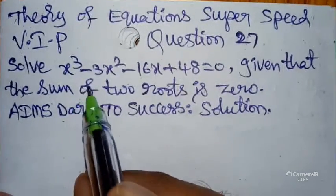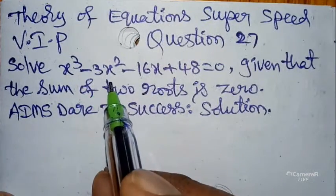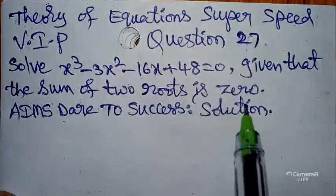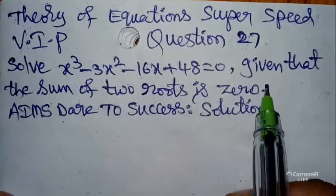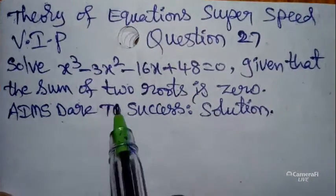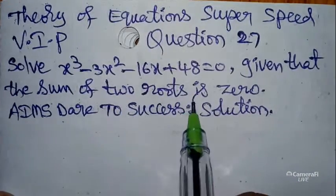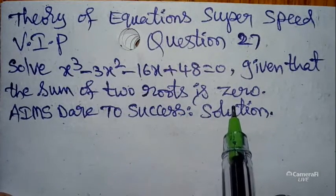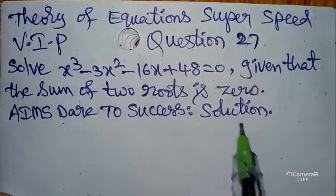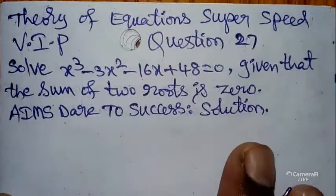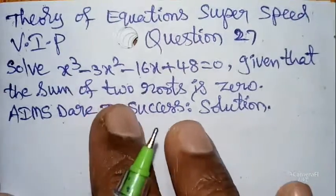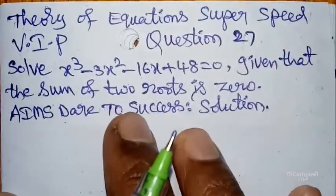Today our question is: solve x³ - 3x² - 16x + 48 = 0, given that the sum of two roots is zero. Aims Dare to Success — solution.